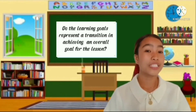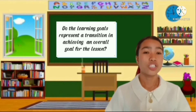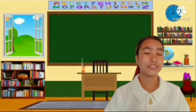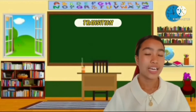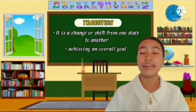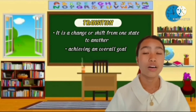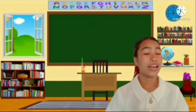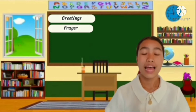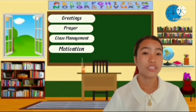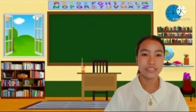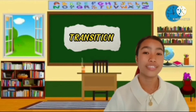Do the learning goals represent a transition? In achieving an overall goal for the lesson, we need to represent a transition. When we say transition, it is a change or shift from one state to another. And by achieving an overall goal for the lesson plan, we have: greetings, followed by prayer, class management, motivation, discussion of the lesson, application, and also the generalization. And these are the examples of transition.